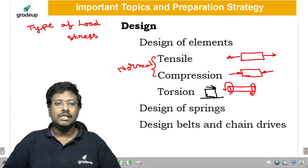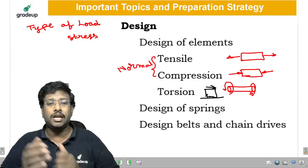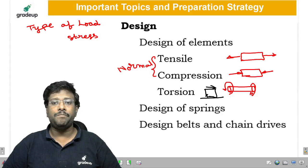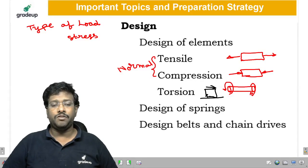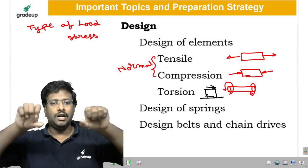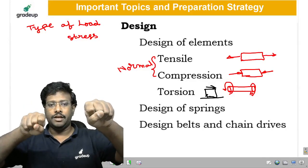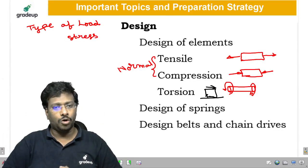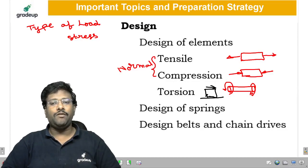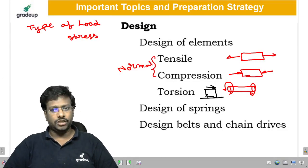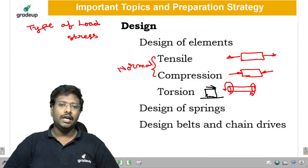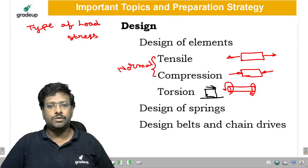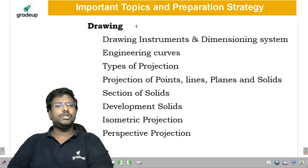If our aim is to transfer power from one place to another, we need to consider transmission elements. Depending on the positions and alignment of the driving and driven machines, we have various transmission modes. Among them, belt drives and chain drives are the most frequently tested elements in design.